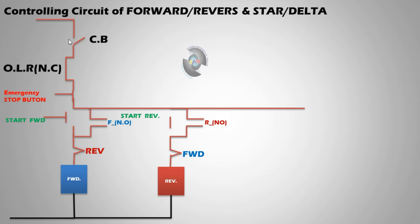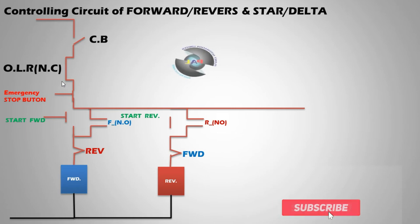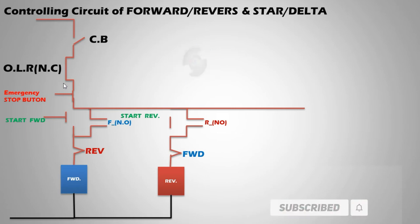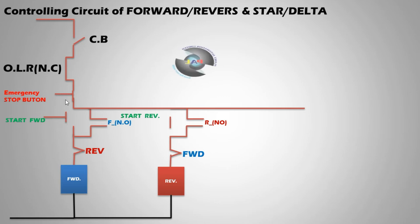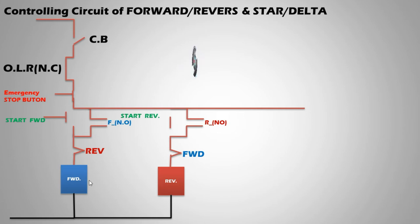The output is connected to pin 95 and 96 of the overload relay, going to the emergency stop button, then to the start-forward button which is connected in NO condition and latching for the push button. This keeps the contactor latched ON all the time. When we start forward, the motor will run in forward direction.